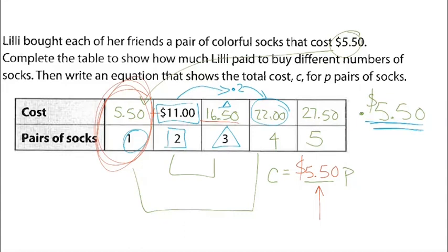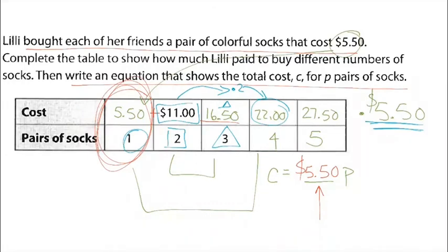By the time you're in high school — you're in seventh grade now — you should not need the table. You should be able to write the equation directly from the first sentence. Lily buys socks at $5.50 each; write an equation for total cost. We're introducing this in seventh grade, so by high school this will be the third, fourth, or fifth time you've seen it. It's okay if your brain is overloaded a little right now — that means it's growing.